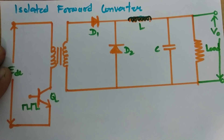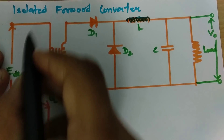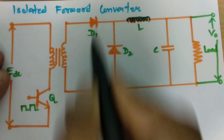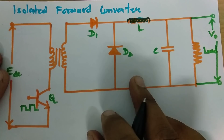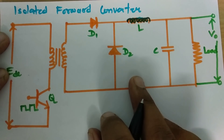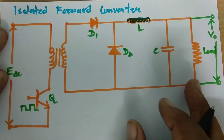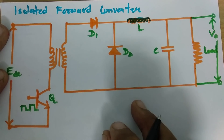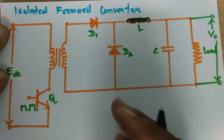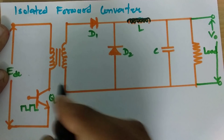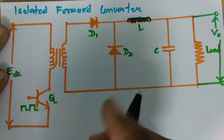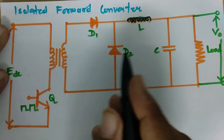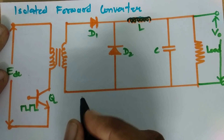Welcome to the power electronics lecture series. In this session I'll be explaining the isolated forward converter. Before I explain this circuit, as I explained in the last session on the flyback converter, let us look at the differences between the isolated forward converter and the flyback converter. The circuit is almost the same, with only two differences.